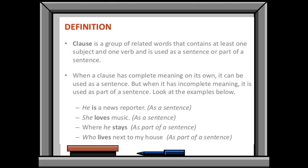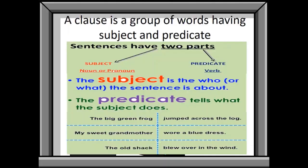Where he stays. Now there is subject, there is verb but it is not conveying its full meaning. So it is working as a part of sentence. Now it is clear that clause can perform its function in two ways: as a sentence and as a part of sentence. We can define clause as a group of words having a subject and a predicate. Subject is one that is the doer of action. And predicate means action it performed.